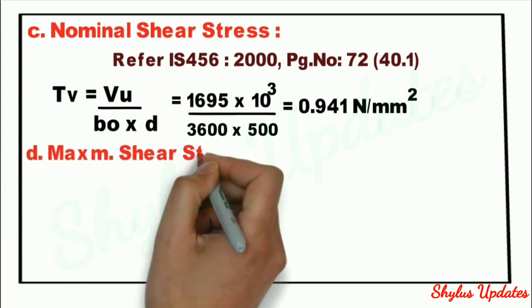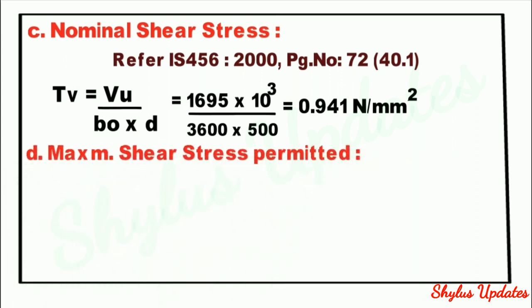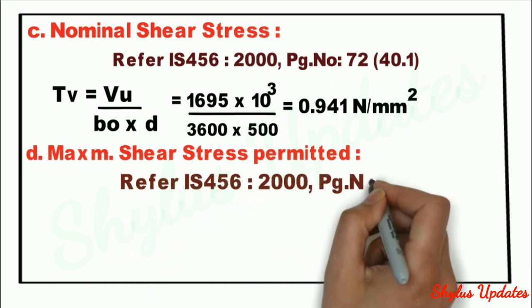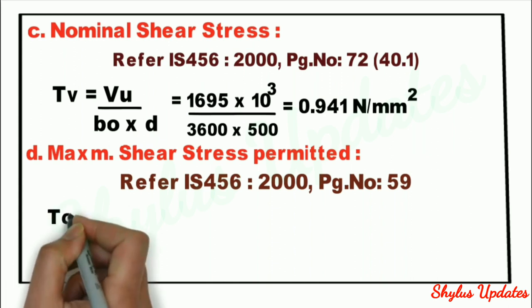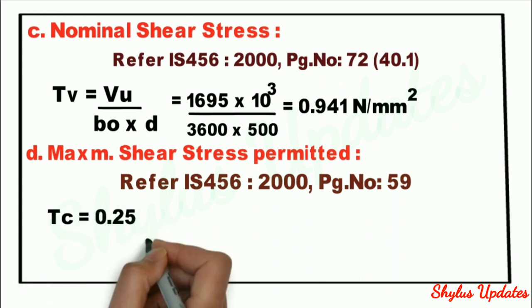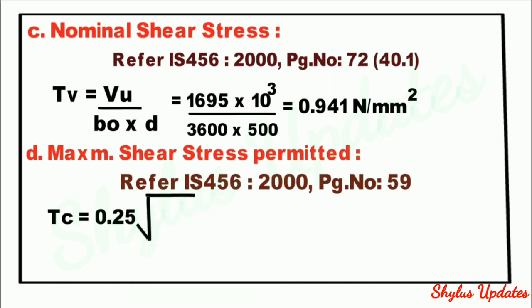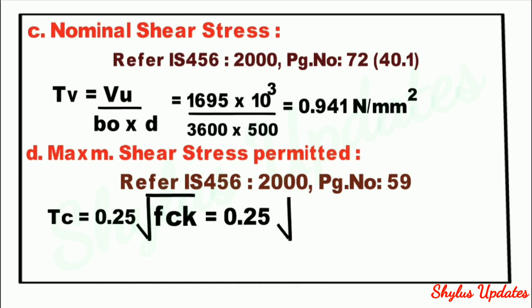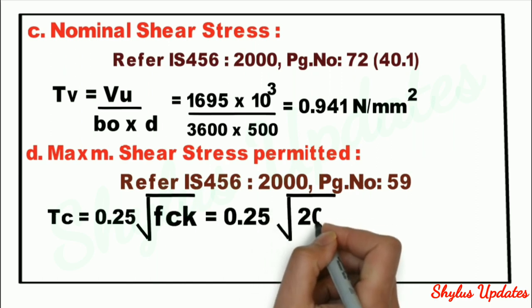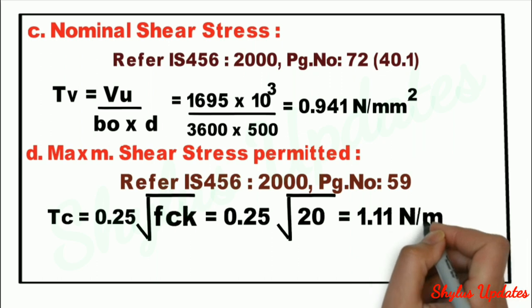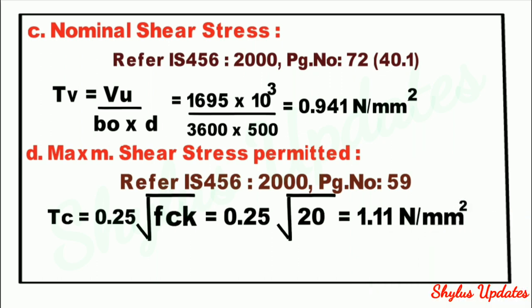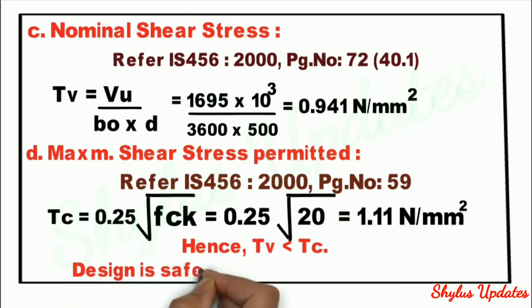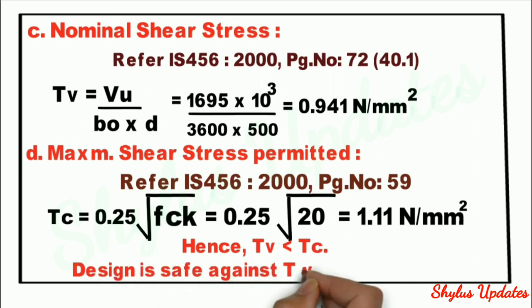Maximum shear stress: refer IS 456-2000 page 59. The formula for τc is 0.25 × √FCK = 0.25 × √20 = 1.11 N/mm². This is the value for τc. Hence τv is less than τc, and therefore the design is safe against two-way shear.